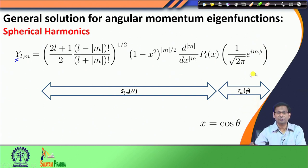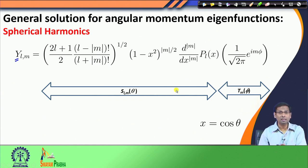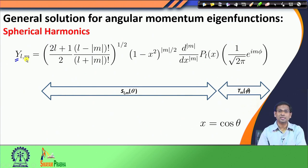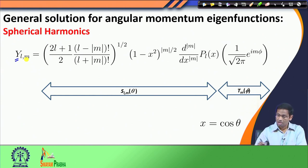The T(phi) function is rather simple-looking, but the S(theta) function is rather complex. Notice also that the T function depends only on one index — m, the second index of the spherical harmonics — while the S function depends both on l and on m. We will discuss more about this S function now.